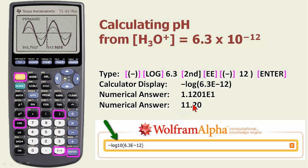Let's perform another calculation. Let's determine the pH. We're finding the pH from the concentration of the hydronium cation. This is the concentration, and when we type all this in, we get this number.